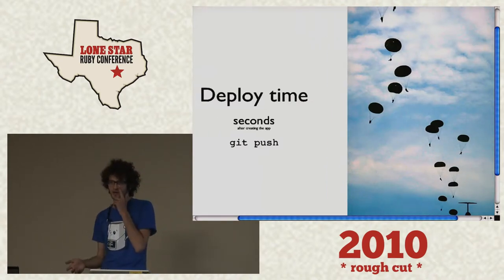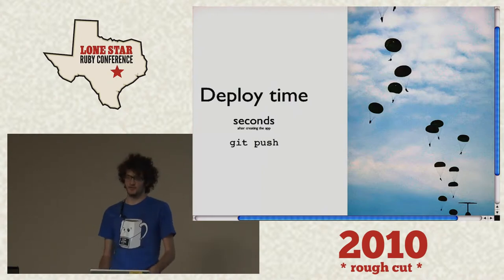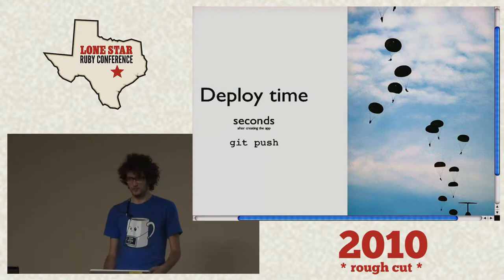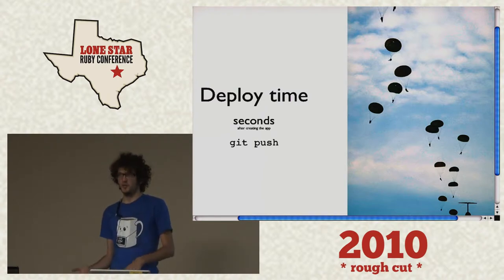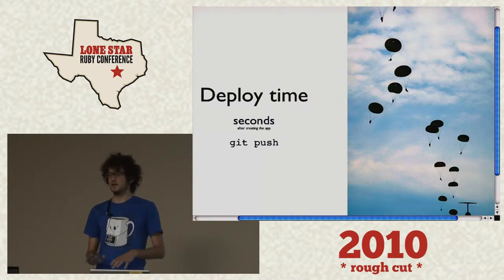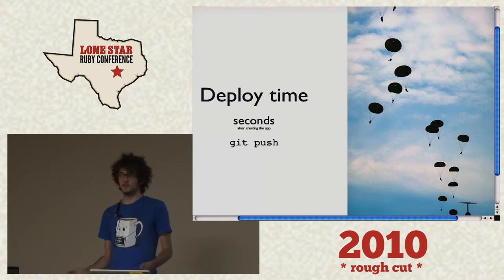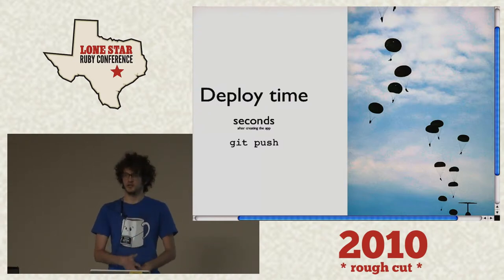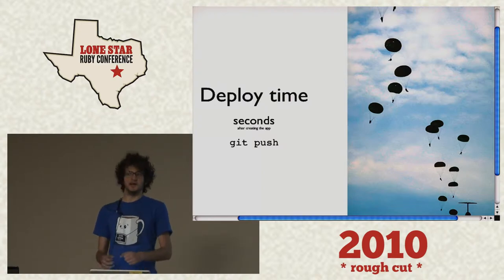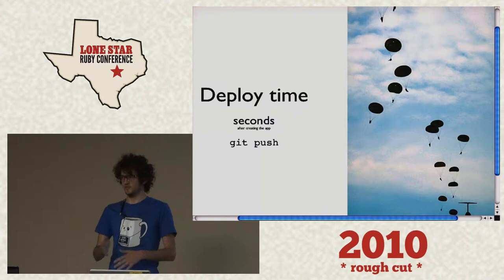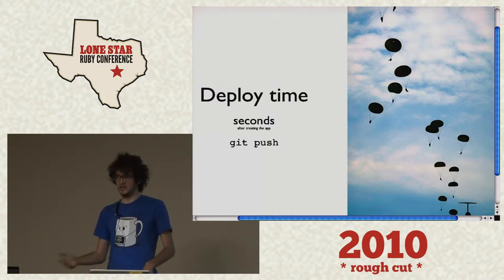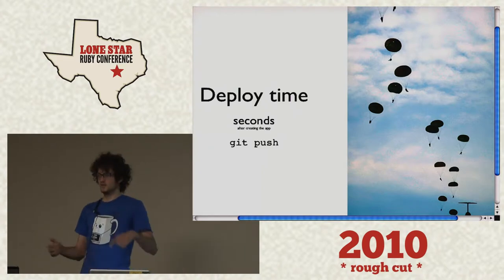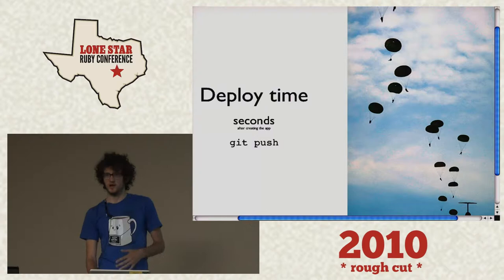So what did that do? That took our deployment time from scheduled releases on Thursday at 2 AM — where we have to stay up until Friday at 1 PM — to seconds. And if there is a problem on the server: if your application is already running and you're deploying a new feature, and your continuous integration server fails, and your application goes up but there's a problem and it can't start, then it won't start rerouting new requests to the new application. So your old application will stay up — there's 100% uptime when you update an application, because if it can't start, it won't start. It takes your deployment time from minutes, hours, months, to seconds.